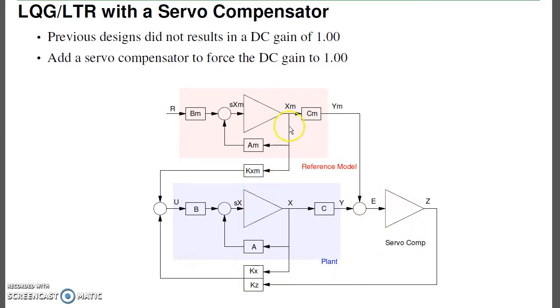I'll now have feedback gains to find. I need to find the feedback gain times the state of the reference model, the feedback gain times the state x, and the feedback gain times my servo compensator. Find all those gains, and we'll do that using LQG-LTR methods.